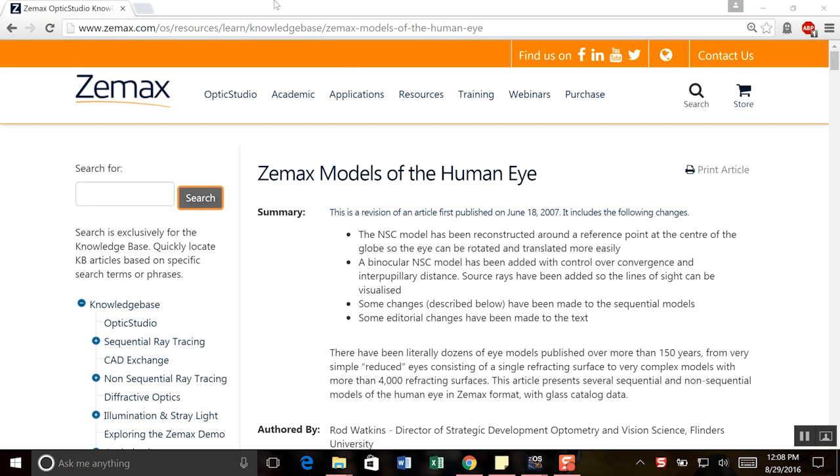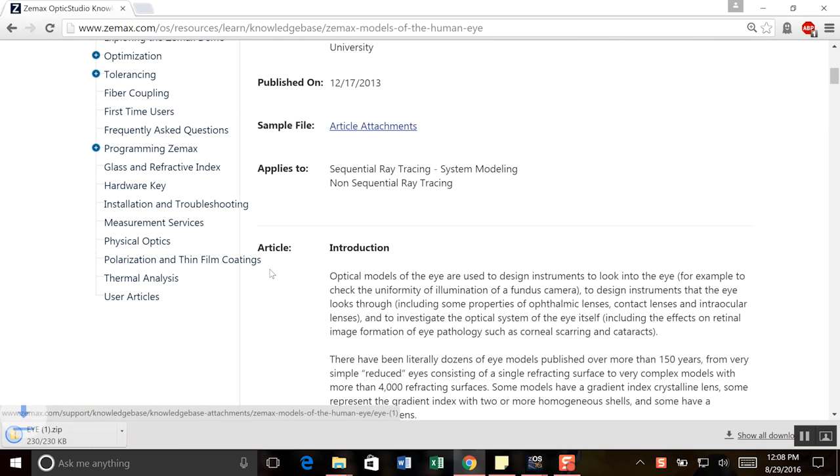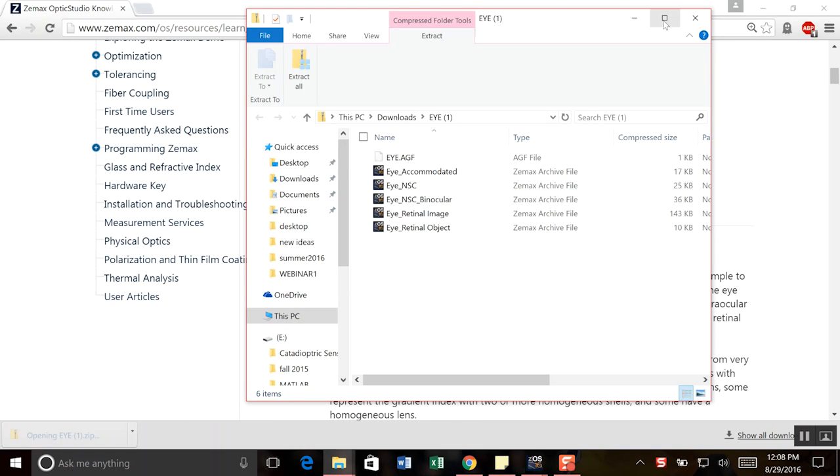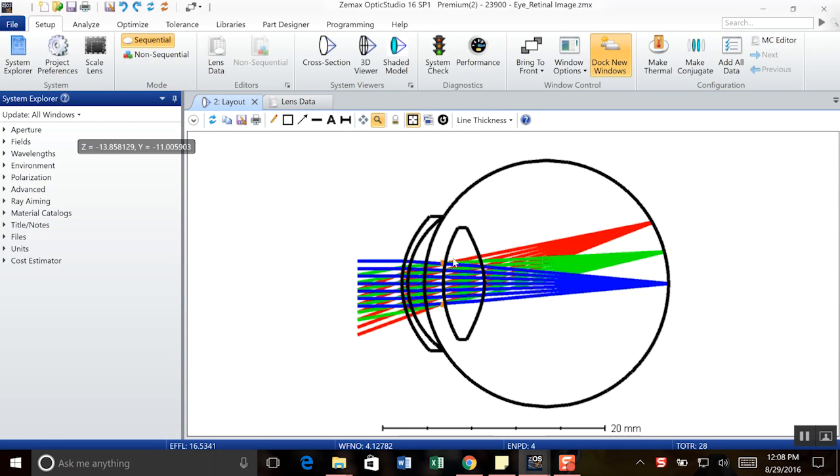So now we'll jump onto OpticStudio and try to apply these ideas to a design. So like I said here, we can go to the knowledge base article, Zemax models of the human eye, and under article attachments, we will find the sample file that we're looking for, and we're going to use the eye retinal image sample file here. So we'll go ahead and open that. So if you look at here, here is our sample file modeling the human eye. So some of the main features here that we should just quickly note, we have our corneal surface, which is represented by this lens, our iris, represented by the stop, our crystalline lens, represented here, and finally our retinal surface, which acts as our image surface.